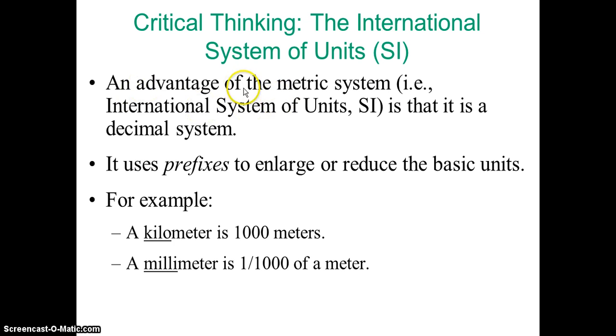So an advantage of metric units, it's called the international system of units, is that it has a decimal system. Whenever we use prefixes to enlarge or reduce a basic unit, for example, one kilometer is 1000 meters and one millimeter is one thousandth of a meter.